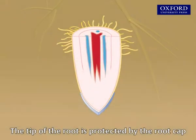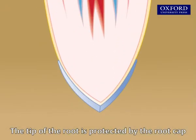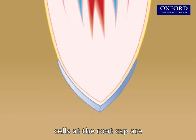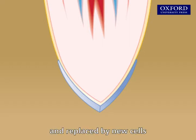The tip of the root is protected by the root cap. When the root grows through the soil, cells at the root cap are continuously rubbed away and replaced by new cells.